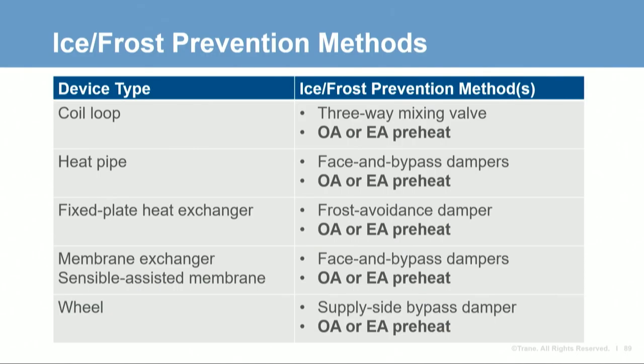Even though the SAM exchanger has higher sensible effectiveness compared to a metal plate exchanger alone, the latent transfer through the membranes and the orientation of that transfer removes the risk of icing. A SAM exchanger with 75% sensible effectiveness will operate at conditions where a sensible-only plate exchanger would need to reduce recovery to prevent ice. The methods of ice/frost prevention described each involve reducing heat recovery capacity — meaning less energy savings during the coldest times. As an alternative, any technology could use a preheat coil to warm either outdoor or exhaust air before it enters the device. Preheating the exhaust air can result in less overall heat required and doesn't risk coil freezing if hot water is used.